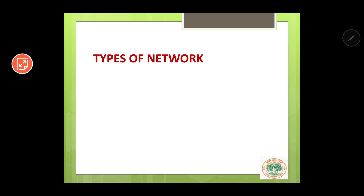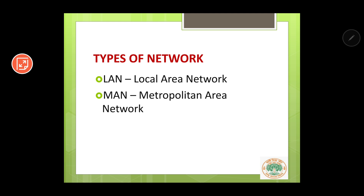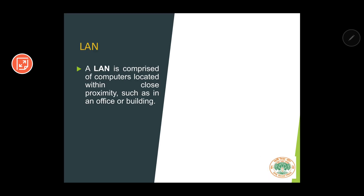There are three types of network. The first is LAN or Local Area Network, the second is MAN or Metropolitan Area Network, and the third is WAN or Wide Area Network. Let's discuss them one by one in detail. Let's begin with LAN. A LAN is comprised of computers located within close proximity, such as in an office or building.